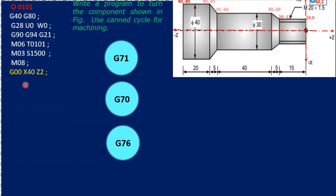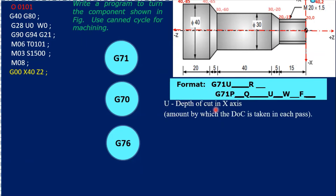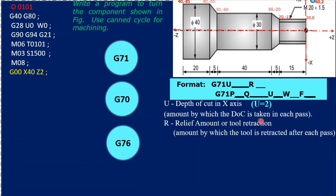G00 X40 Z2 brings the tool to the starting position. Now when writing the G71 canned cycle — this is the multiple turning cycle — U is the depth of cut. I have taken U2, meaning 2 mm depth of cut will be removed each pass to achieve the desired size. R is the retraction value, which I set to 1 or you can take 0.5. After every cut the tool retracts 1 mm up or back.